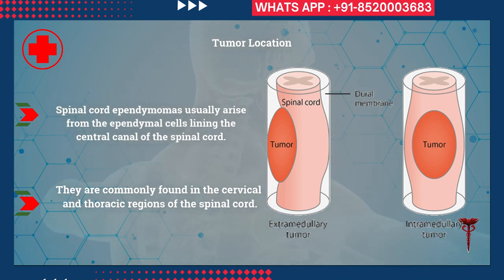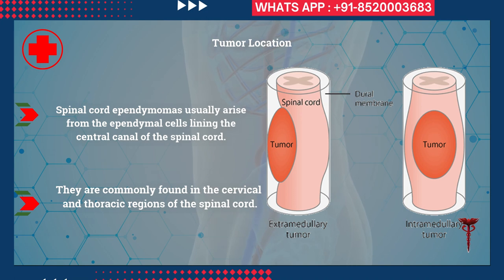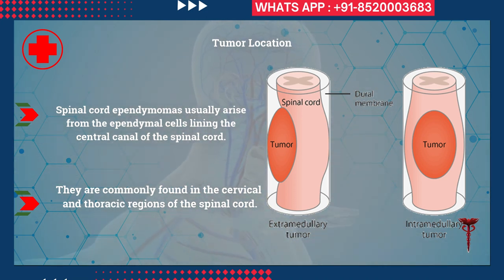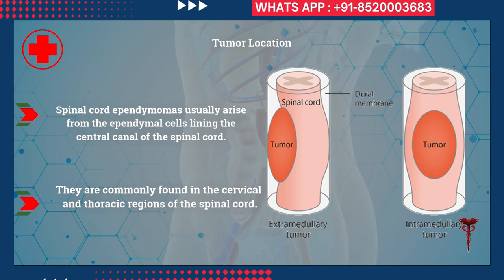First, you need to know the exact tumor location. Spinal cord ependymomas usually arise from the ependymal cells lining the central canal of the spinal cord. As you can see in this picture, an extramedullary tumor arises outside the spinal cord and compresses it. But ependymomas are intramedullary tumors - they arise from within the spinal cord and cause bulging of the spinal cord.